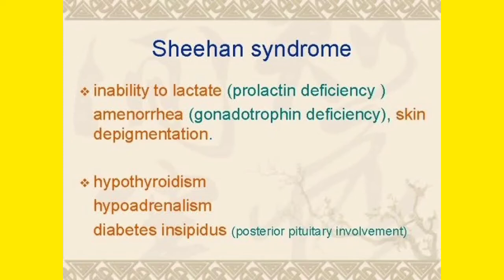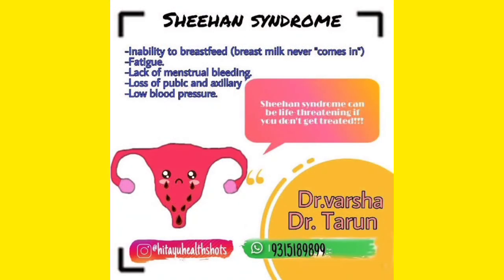Another important feature is skin depigmentation. Melanin is a pigment inside our skin that gives it its color. When Sheehan syndrome occurs and the pituitary gland is necrosed, melanin is not properly produced, causing skin depigmentation — the pigment decreases and the coloration of the skin fades. So to summarize: inability to lactate due to prolactin deficiency, amenorrhea due to gonadotropin deficiency, and skin depigmentation.